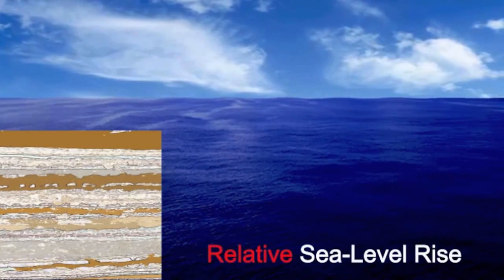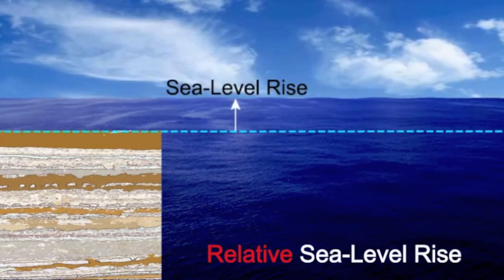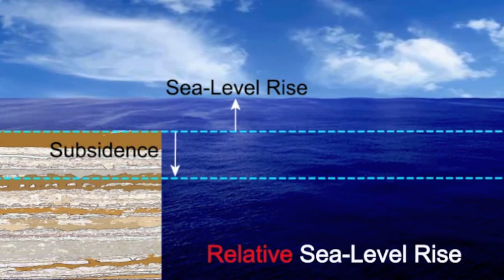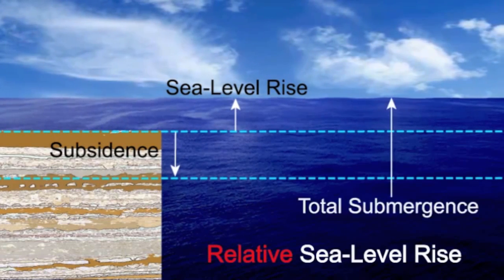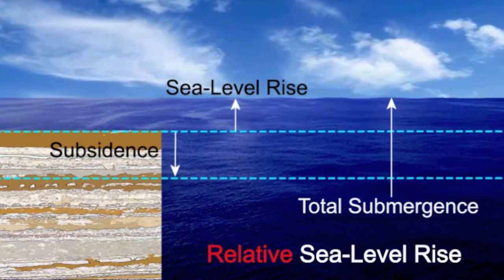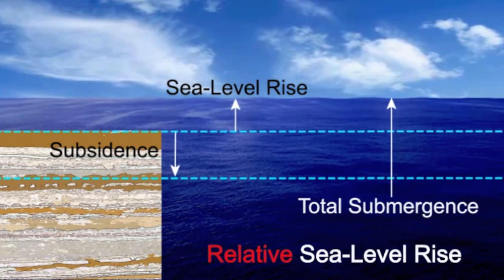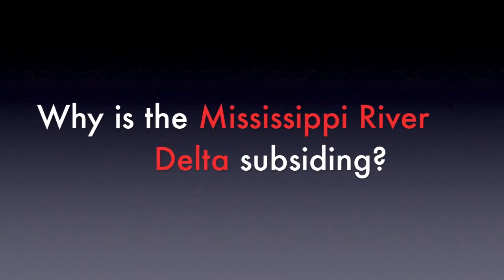Relative sea level rise is the combination of eustatic rise in sea level and land movement, and is unique for each location. The combination of the two processes determines the rate of submergence in each coastal area.